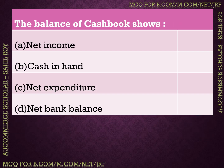Next question: the balance of cash book shows — net income, cash in hand, net expenditure, or net bank balance. The correct answer is cash in hand — the cash book balance shows how much cash in hand you have.